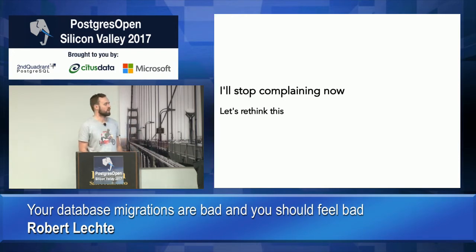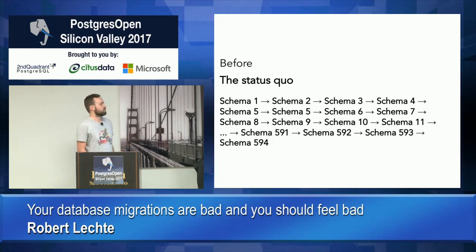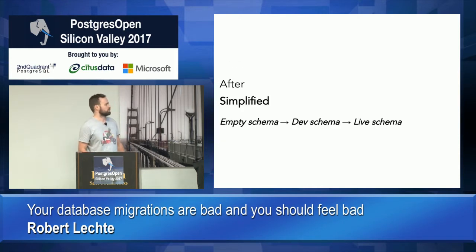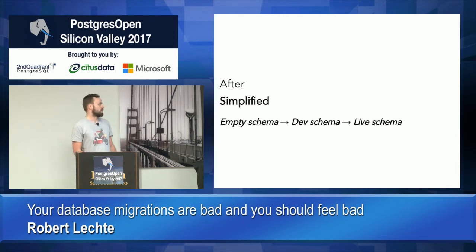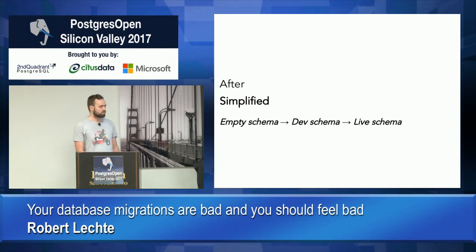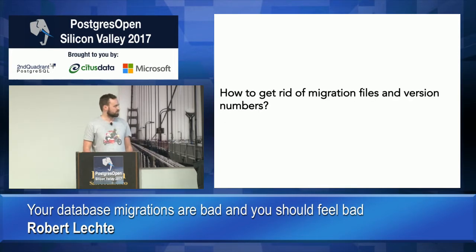So let's stop complaining and think about how we could solve these problems. The first thing to look at is the status quo with this long sequence of schema versions. Really there are only ever three schema versions we're thinking about: the production schema, the development schema — which every so often we deploy so it becomes our live schema — and the empty schema, which we need to set up our development environment. Those are really the only three things we worry about.